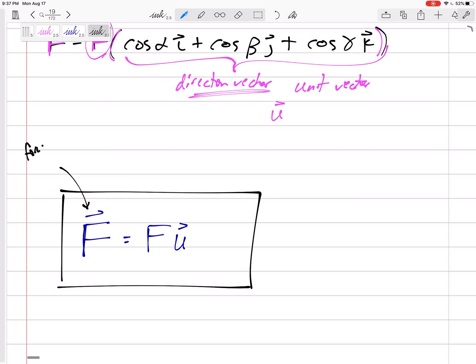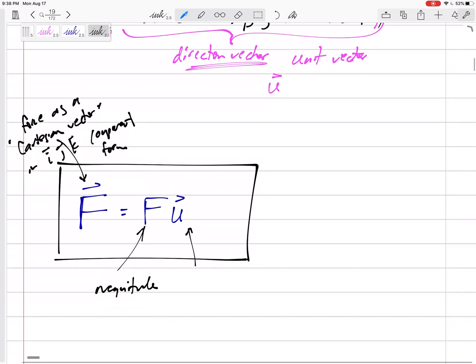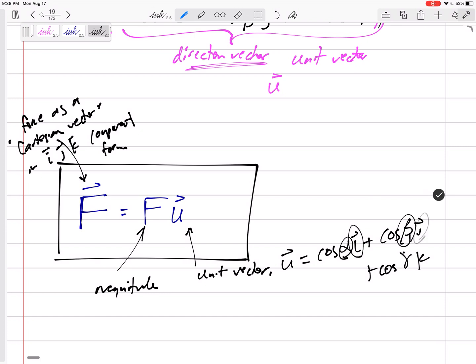So let me kind of write this in words. The force as a Cartesian vector, meaning in i j k component form, is equal to the magnitude times the unit vector, which is cosine alpha i plus cosine beta j plus cosine gamma k, where alpha is the angle to the positive x, beta is the angle to the positive y, and gamma is the angle to the positive z.